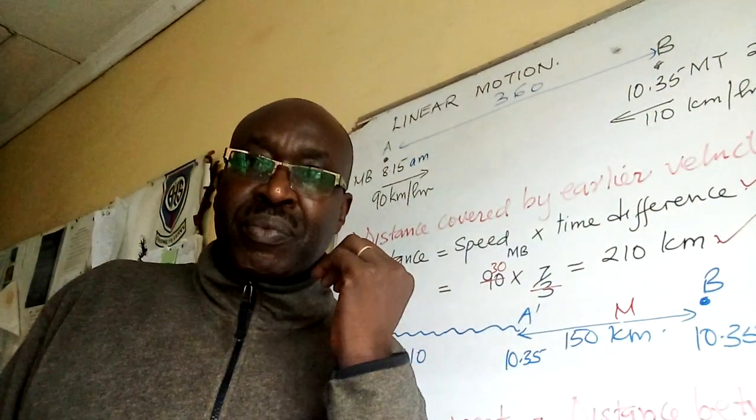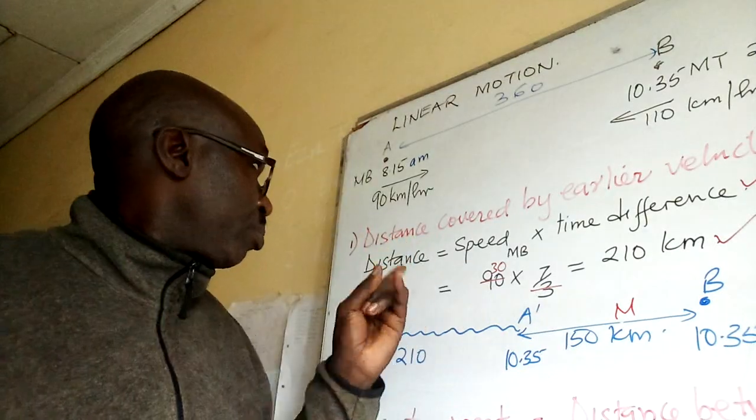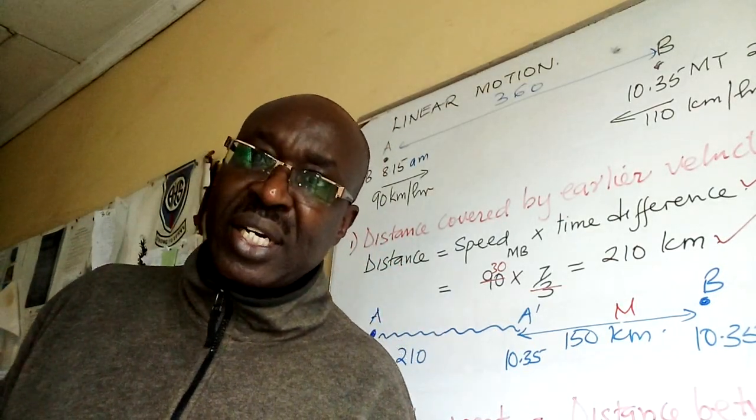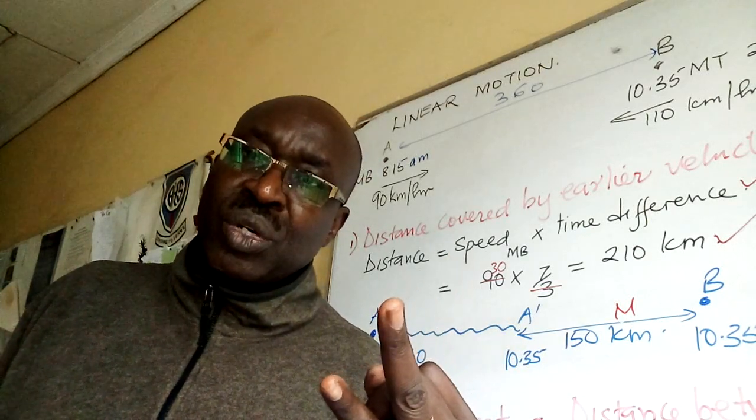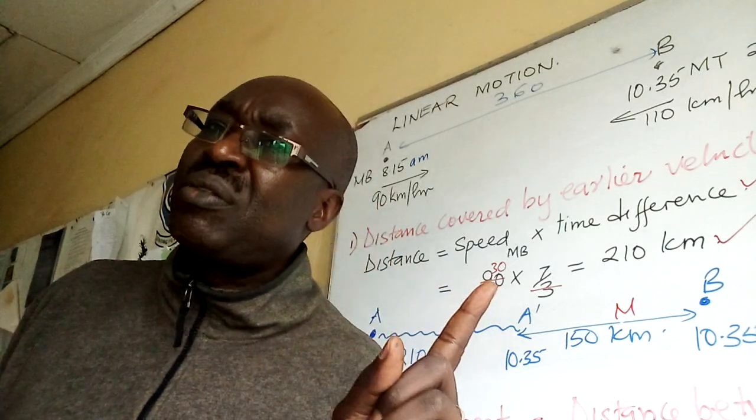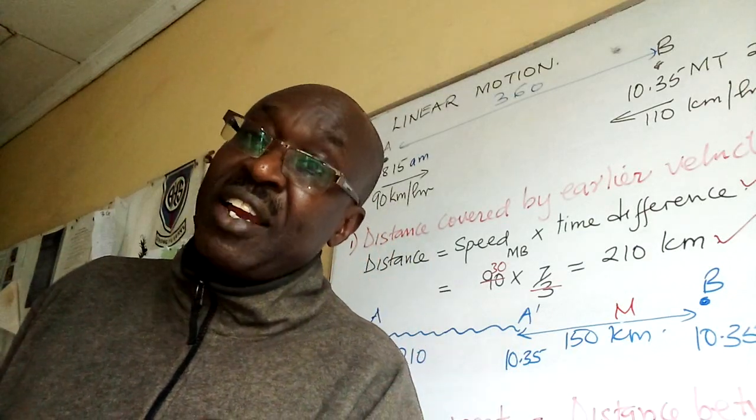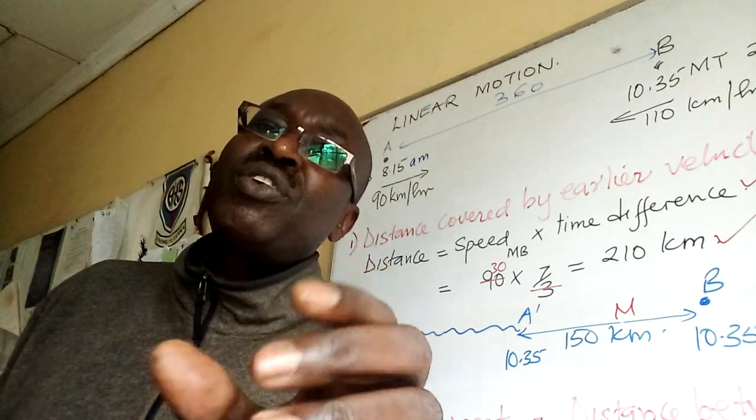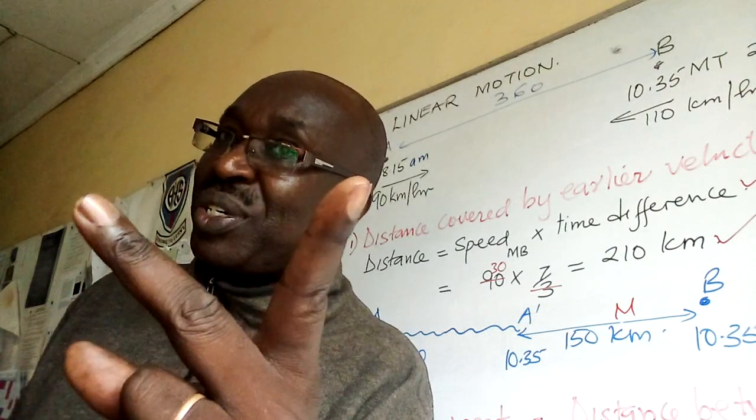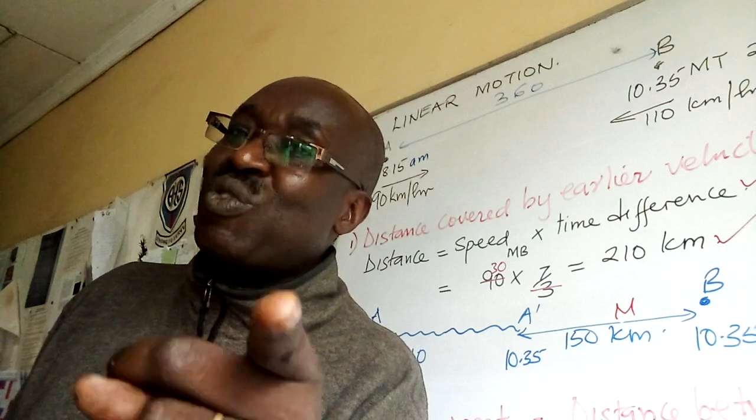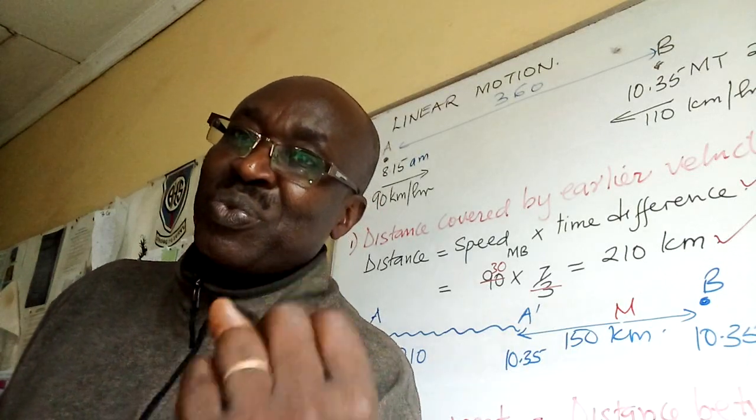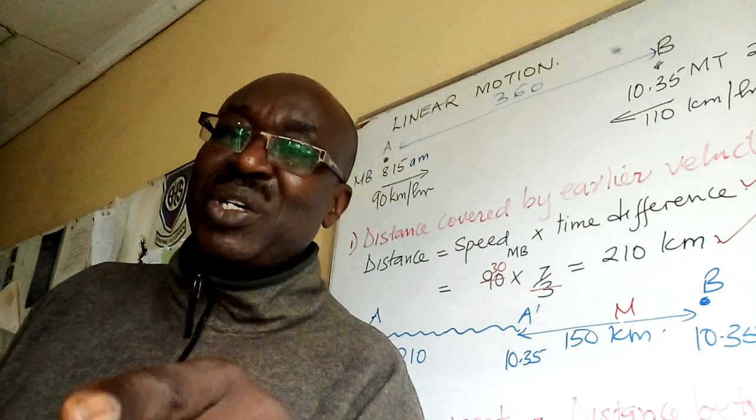I will stop there. Key things that you must know from this: distance covered by the earlier vehicle - you must get that one clear. Two: time to meet or overtake is distance between divided by relative speed. Three: analyze the framework of time because you are likely to get two more questions. One: how far from A or from B did they meet? Two: at what time - that means time of the day.